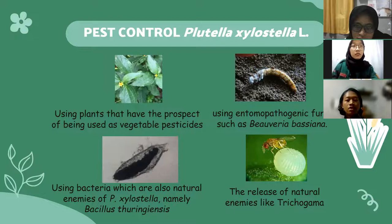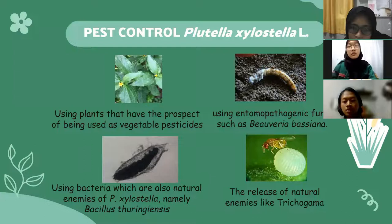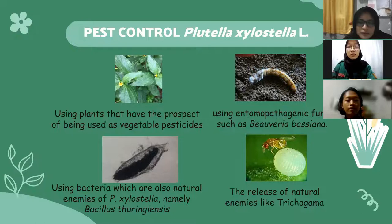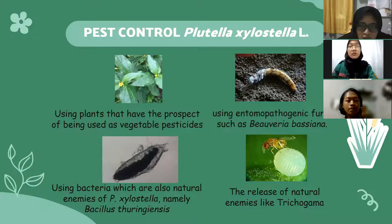Pest control of Plutella xylostella. Number one: using plants that have the prospect of being used as vegetal pesticides. Number two: using entomopathogenic fungi such as Beauveria bassiana. Number three: using bacteria which are also natural enemies of Plutella xylostella, namely Bacillus thuringiensis. Number four: the release of natural enemies like Trichogramma.